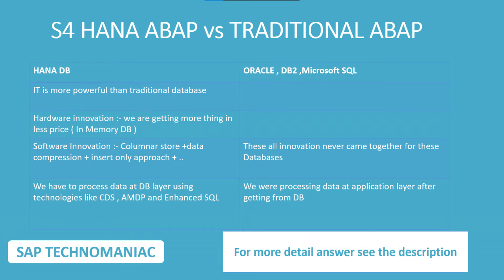What is the advantage of S4 HANA over traditional SAP? So in traditional SAP, S4 HANA came for the database code change. Initially, we were using Oracle, DB6 databases or SAP SQL databases. Then SAP came up with their own database: